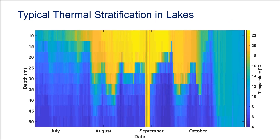All lakes will experience some seasonal stratification, especially mid-latitude lakes where summers are hot and winters are very cold. These lakes normally have two periods of mixing in spring and fall, and two stratified periods in summer and winter, referred to as a dimictic lake.